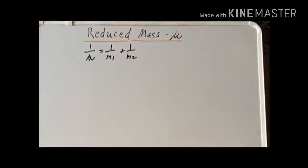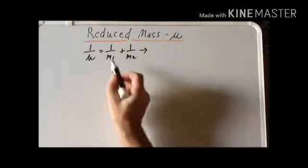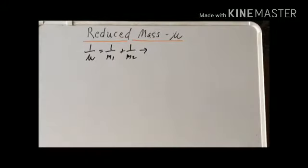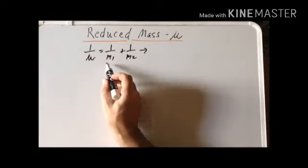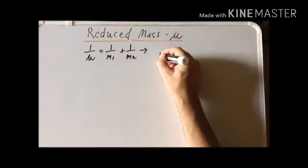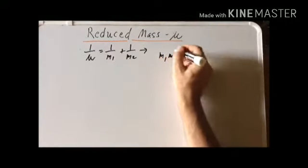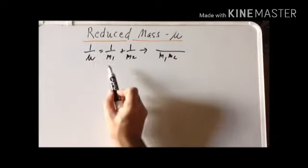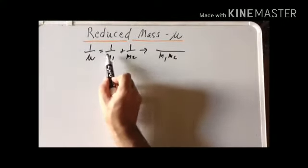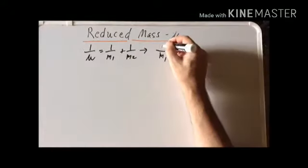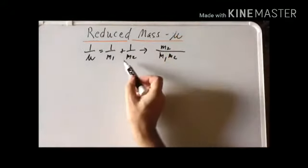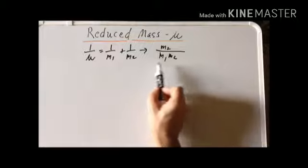We can derive a sometimes more useful way of writing the reduced mass directly by noting that if we're trying to add two fractions together, we have to find a common denominator. So the common denominator that we would like to use would be M1 times M2. If we do that, this first fraction is M2 over M1 M2, and then the second fraction is going to be M1 over M1 times M2.